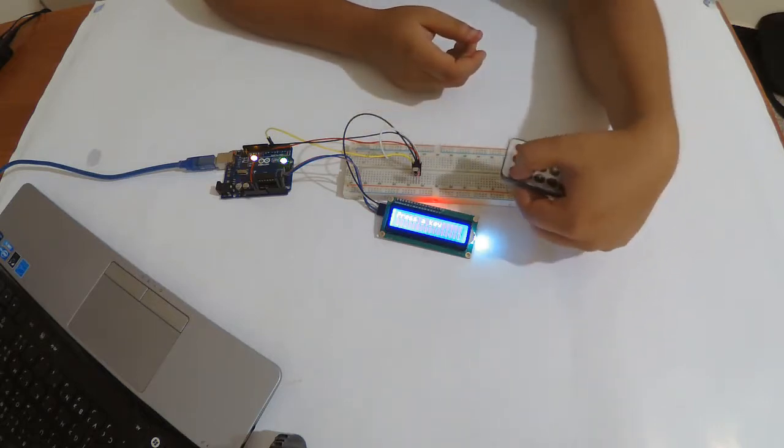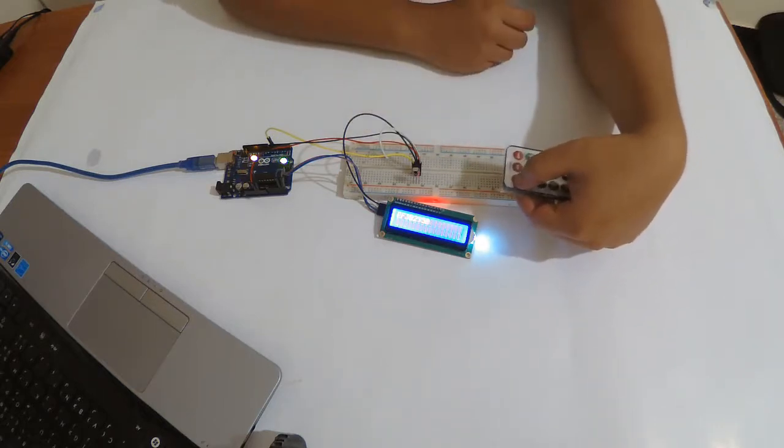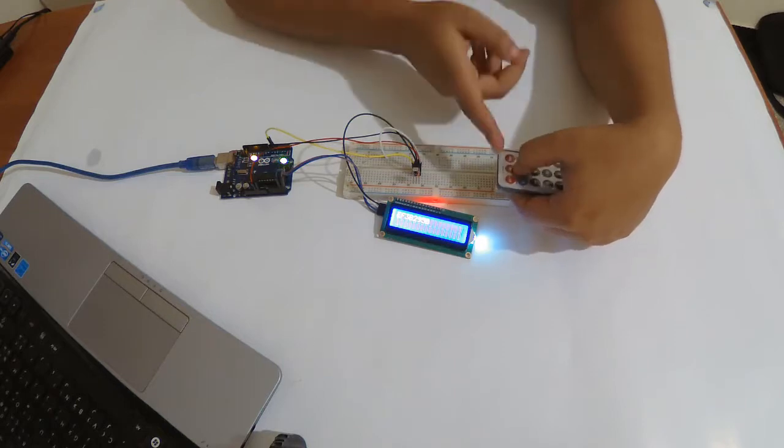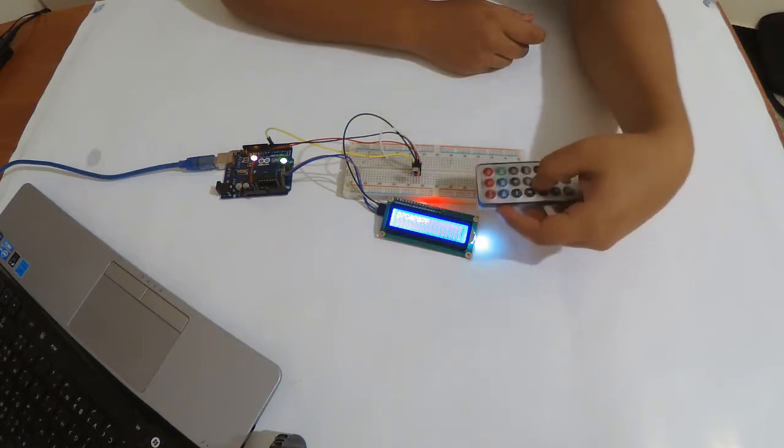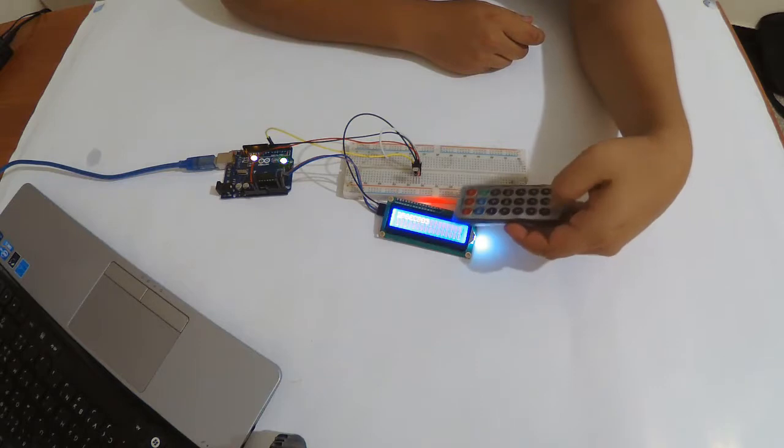So when I press keys, you see we have a hexadecimal number for that key. Every key has its own.